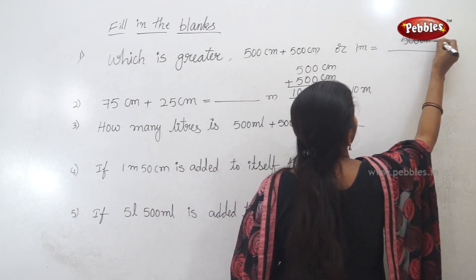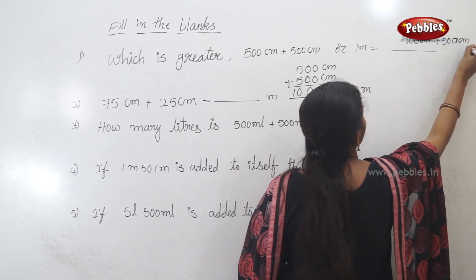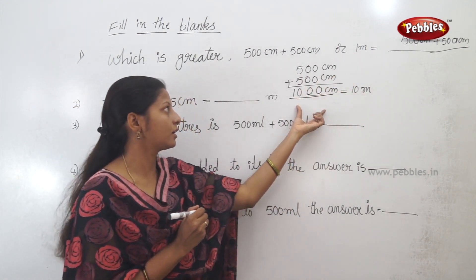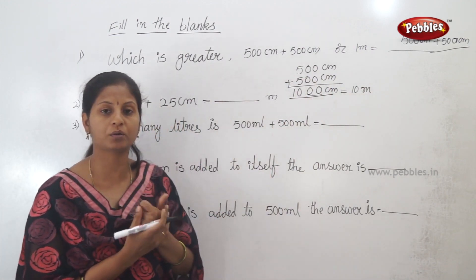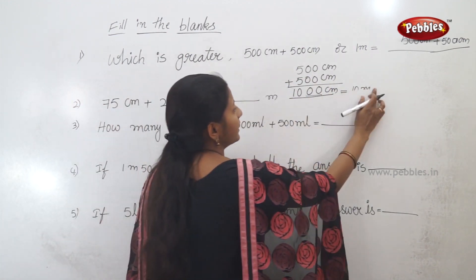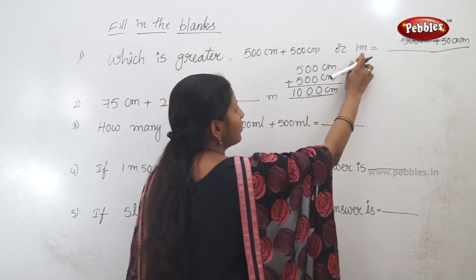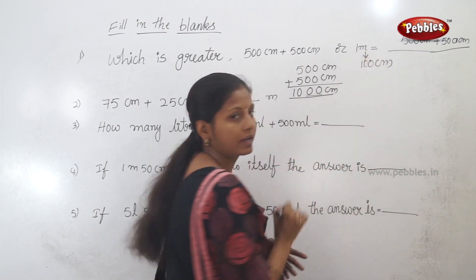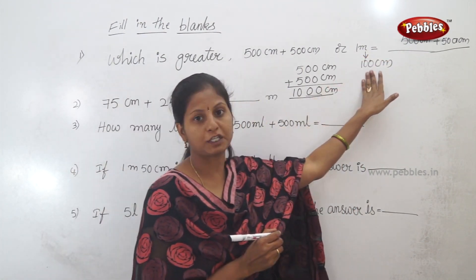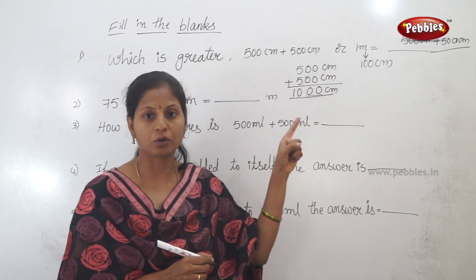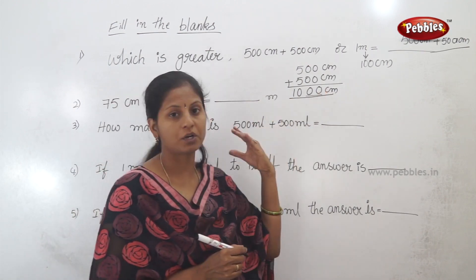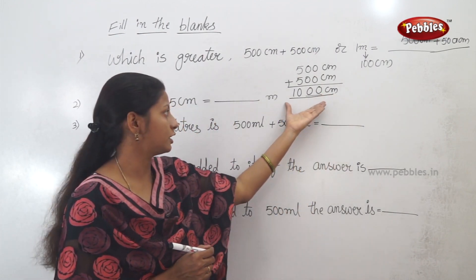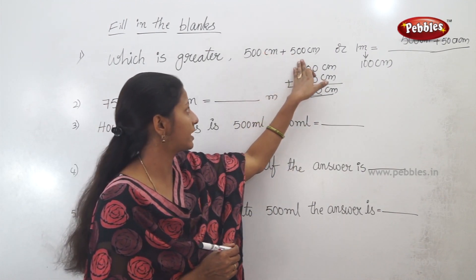What is greater? 500 centimeters plus 500 centimeters equals 1000 centimeters. And 1m and 10cm is 100cm. We will match 2m. So 1000 centimeters and 100 centimeters are not equal. 500 centimeters plus 500 centimeters are not equal. So I am going to fill in the blank.